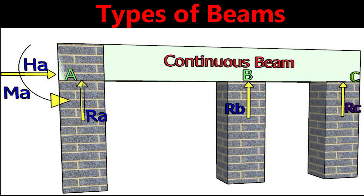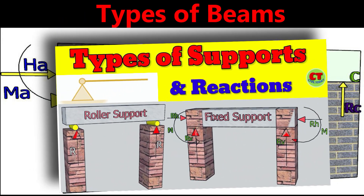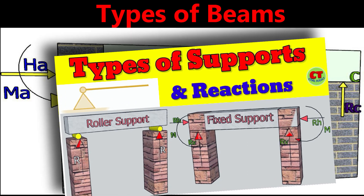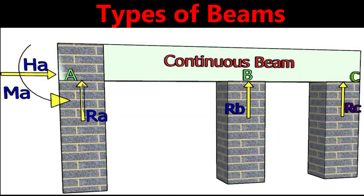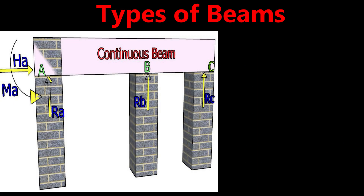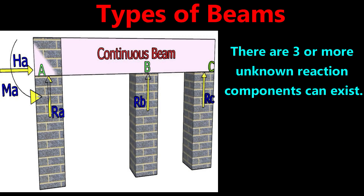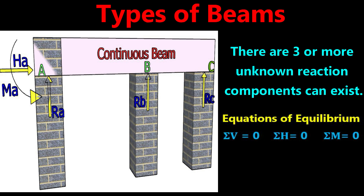The fourth type is the continuous beam. If a beam has more than two supports — whether simple support, roller support, hinge support, or fixed support — it is considered a continuous beam. For example, a beam supported by simple supports at two points and a fixed support at another point is continuous. Such beams have three or more unknown reaction components that cannot be found using equilibrium equations alone, making continuous beams statically indeterminate. They are seen in bridge constructions and multi-story buildings.